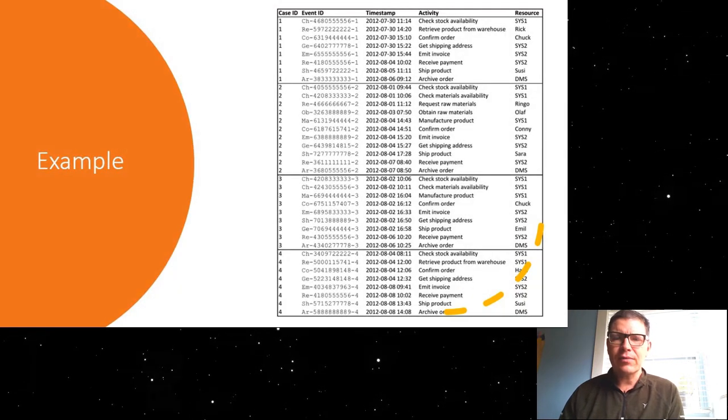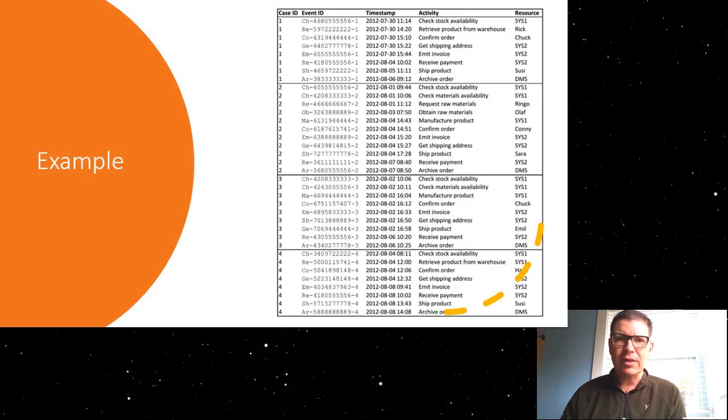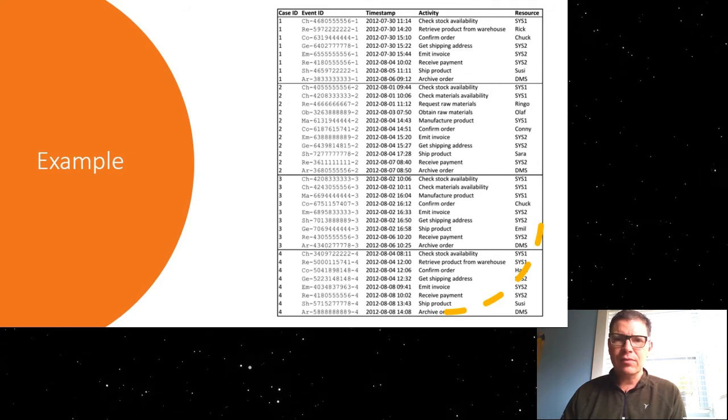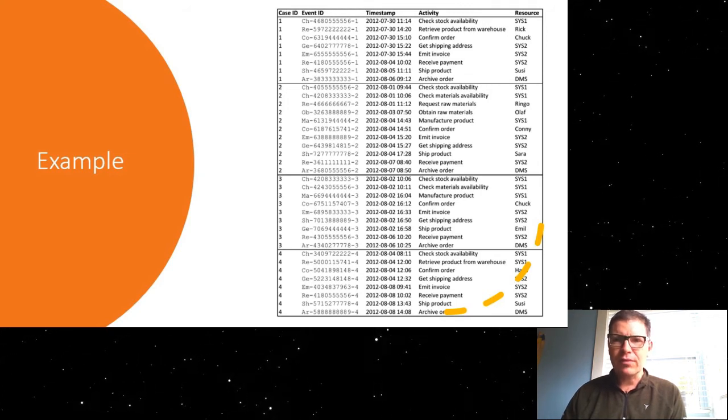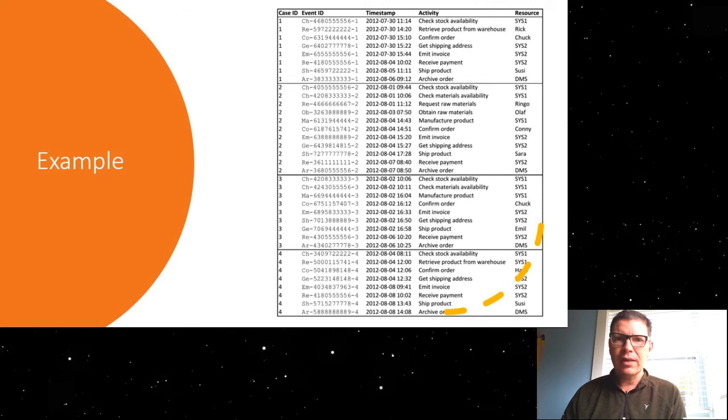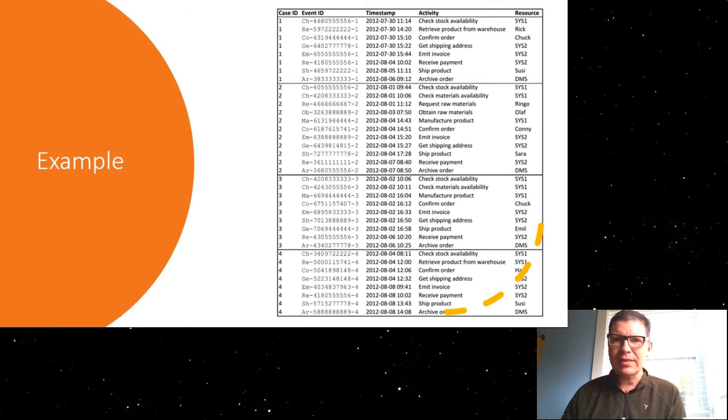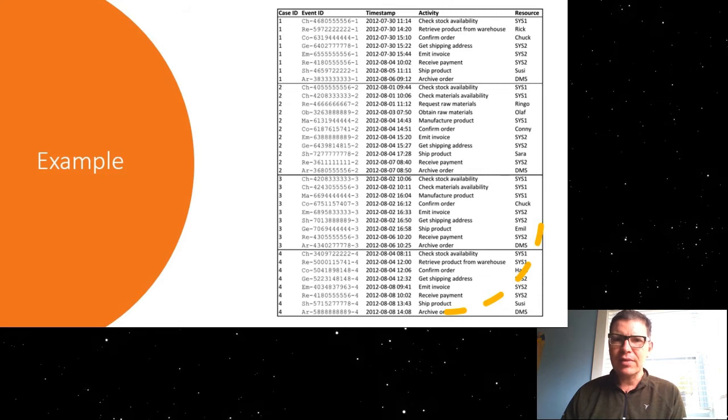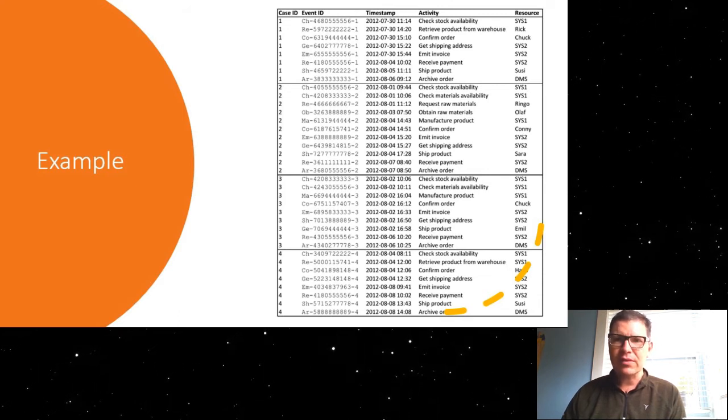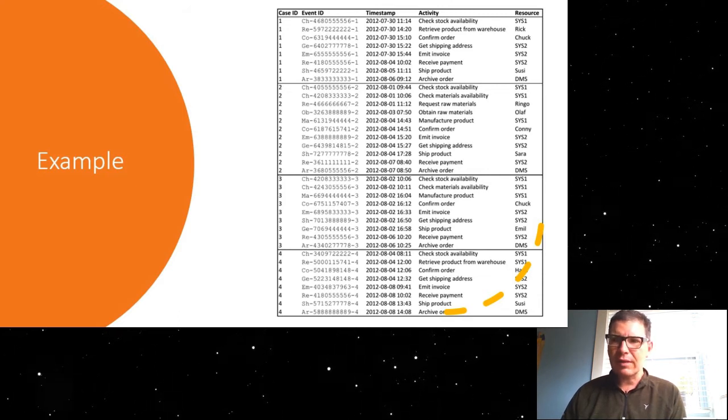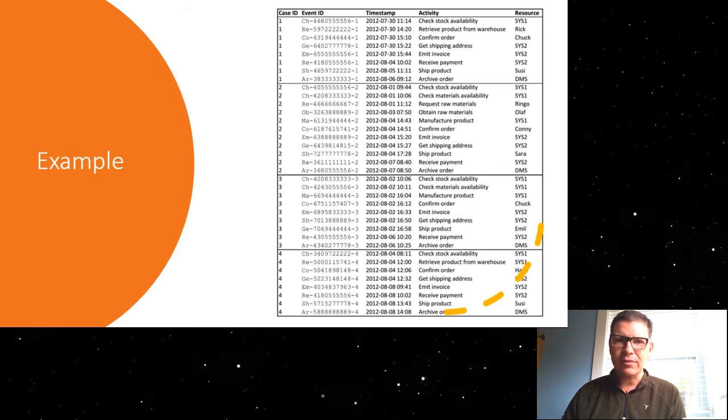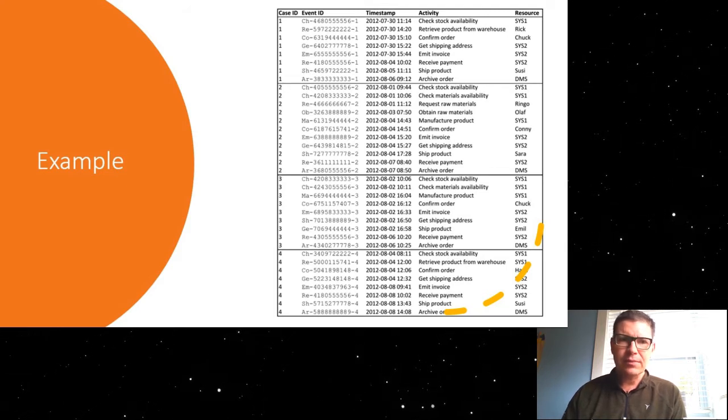On this slide, I have a brief example of what such an event log might look like. You see four different cases or four different traces in this event log. Every trace has a number of events. These events have an ID, a time stamp, an activity and a resource identifier. So this is a very simple example. This does not have any sort of application specific information attached to it.